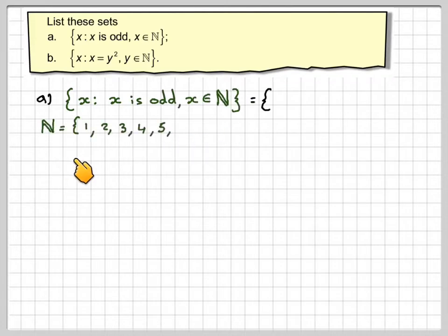So the set of N is 1, 2, 3, 4, 5, 6, and so on. We want these x numbers to be odd. So the first one is going to be 1, the next number is going to be 3, the next number is going to be 5, and then we can put three dots in and it carries on forever more.